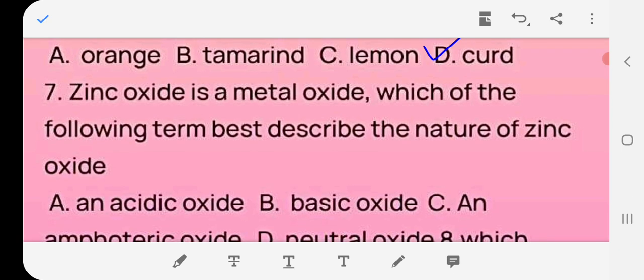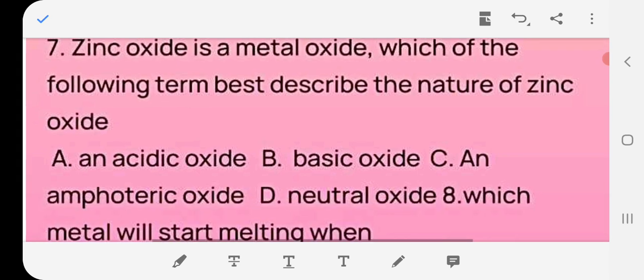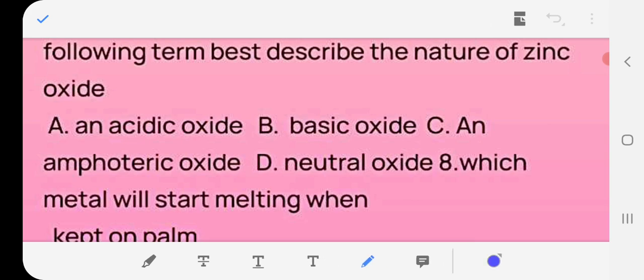Question number seven: zinc oxide is a metal oxide. Which of the following term best describes the nature of zinc oxide? The answer is C, an amphoteric oxide.